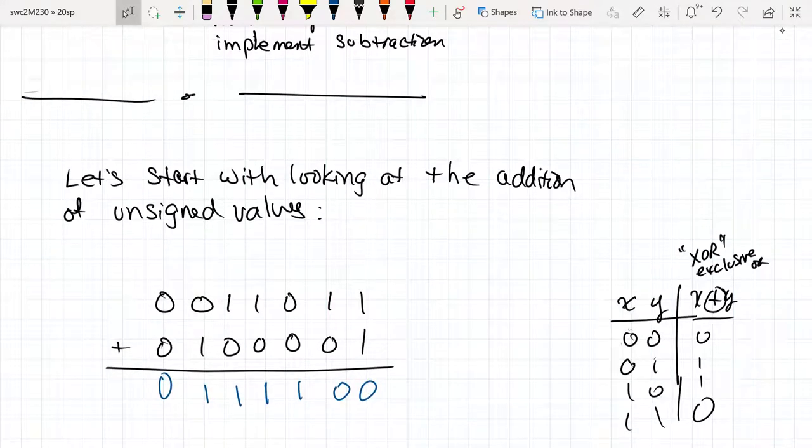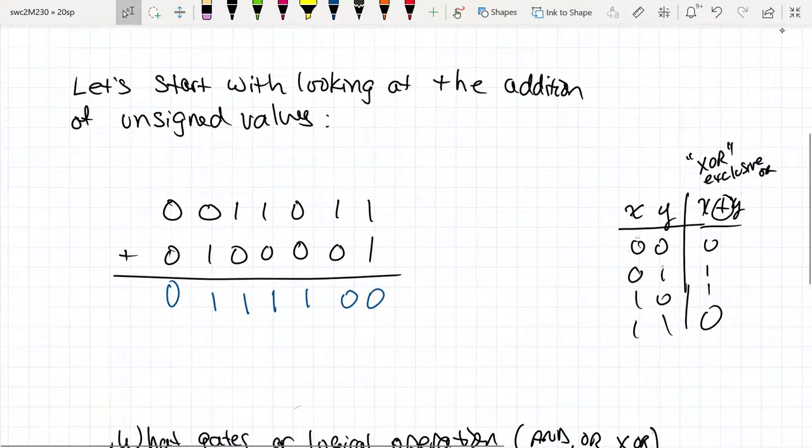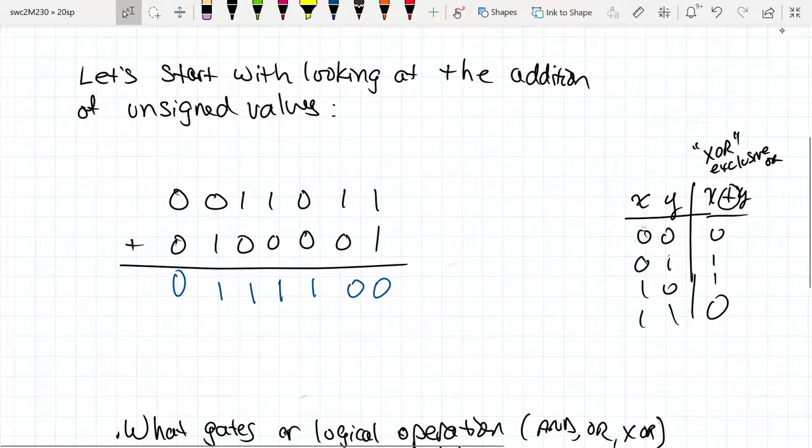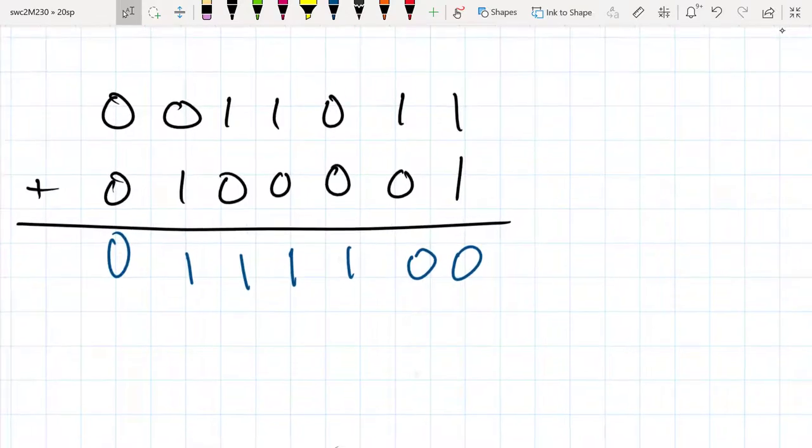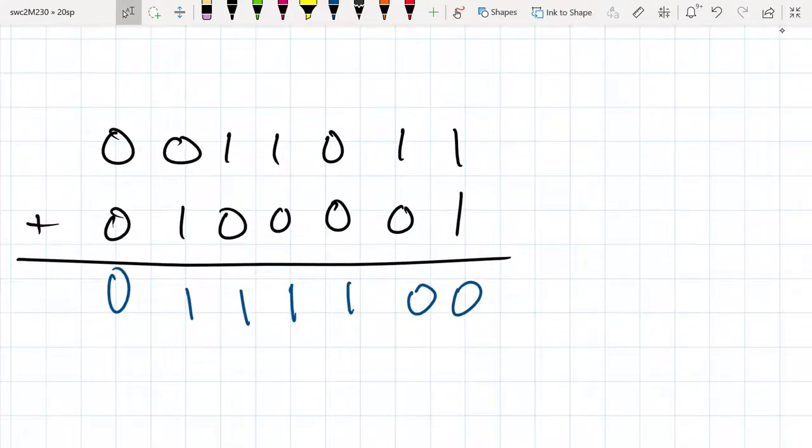So let's start looking at the addition of just a binary value, assuming that there's no sign information associated with it. Let's try to figure out quickly what these two values are and what the sum of these two values is. So 1, 2, 4, 8, 16, 32, 64 are the placeholders.